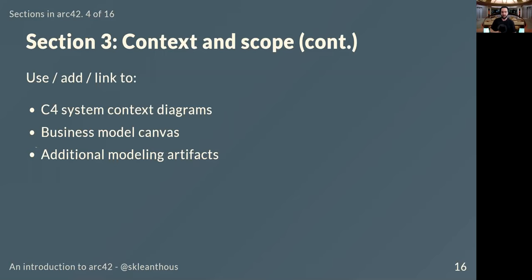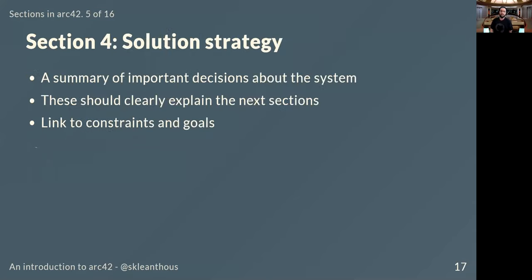I would also suggest adding any modeling artifacts that make sense in your case. For example, Domain Storytelling diagrams — similar to user stories but created graphically, showing users interacting with systems in a sequence of interactions, closer to activity diagrams. Keeping domain storytelling at a very high level provides insight into how users interact with our system and what value they provide, aligning well with this section.